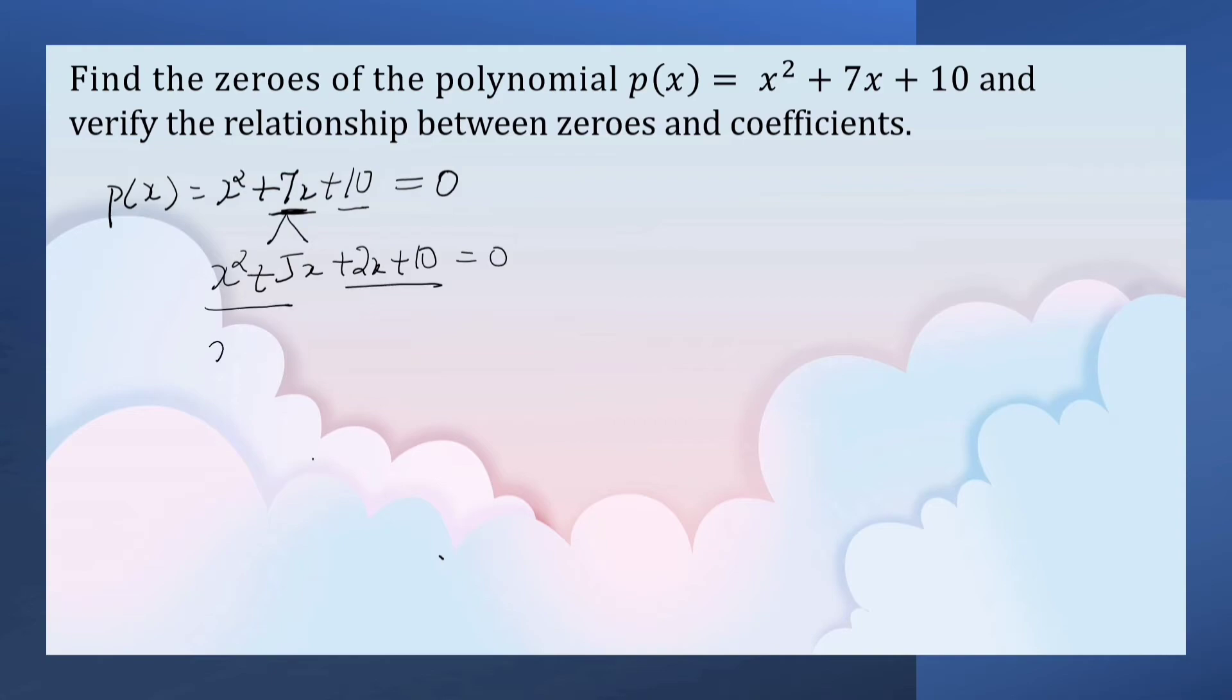Now let us group this: x is common, x(x + 5) plus here 2 is common, 2(x + 5) = 0.